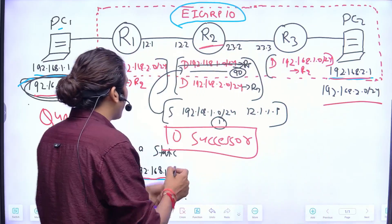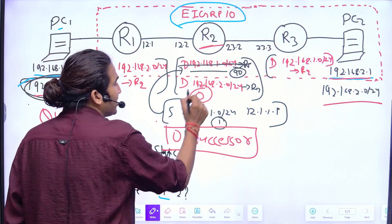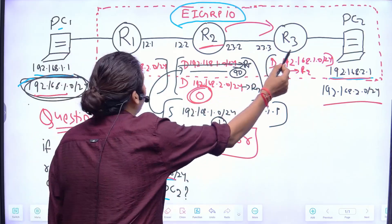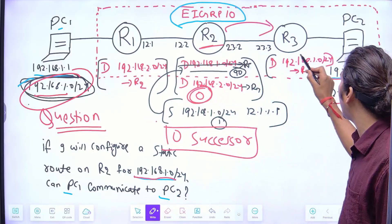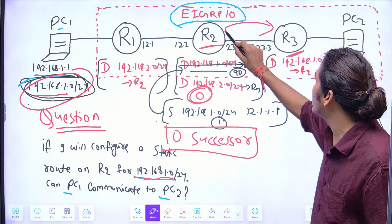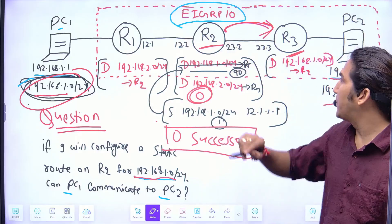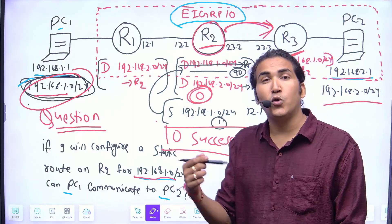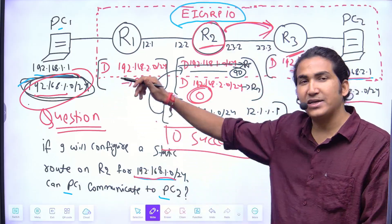Whenever an EIGRP router has zero successors for a network in the topology table, it does not use that network, does not install it in the routing table, and — most importantly — does not advertise it to its neighbors. So as soon as you configure the static route on router 2, there are zero successors for LAN1 subnet in the EIGRP topology table, and router 2 will not advertise that subnet to R3. Therefore R3 will not have a route to reach LAN1, and that is why PC1 and PC2 cannot communicate.